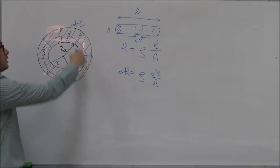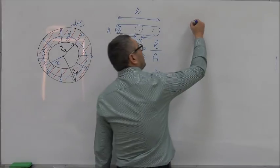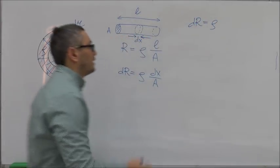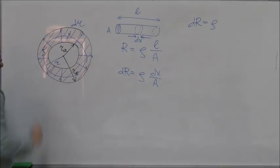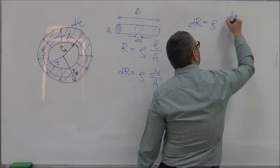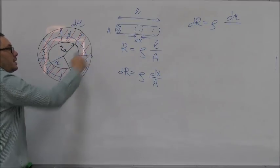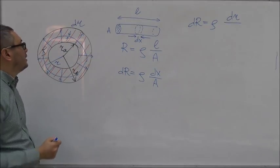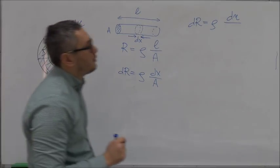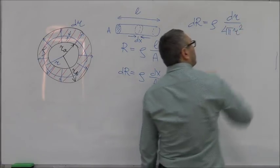If you think of that spherical shell, it has a certain resistance dR which is equal to ρ times the thickness of that spherical shell, which is DR, divided by the surface area. The surface area of the sphere would be equal to 4πR².